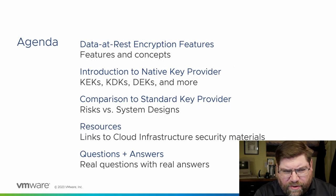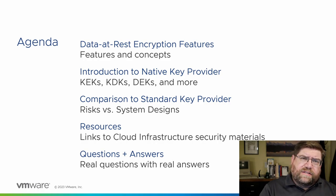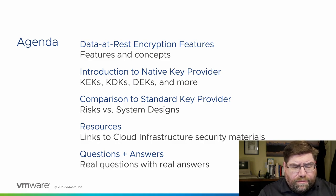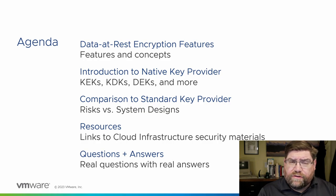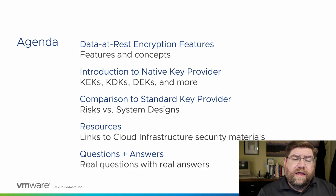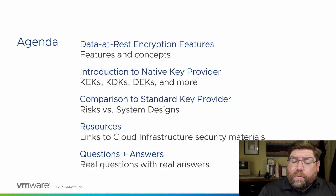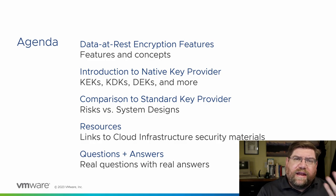Let's talk about the agenda. We'll go through data at rest encryption features, we'll talk about the different key providers — native key provider compared to standard key providers. Standard key provider has been around since vSphere 6.5, along with VM encryption. We'll talk about resources, then I'll give you a link to Q&A. There are 50-some odd questions out on core.vmware.com that probably answers whatever you're thinking about. And if it doesn't, you can leave me feedback and I'll answer it and put it in there for you.